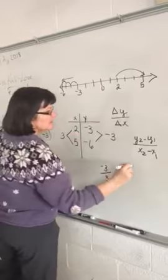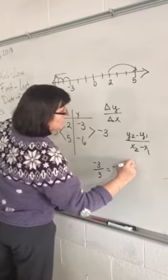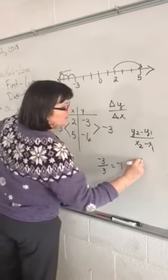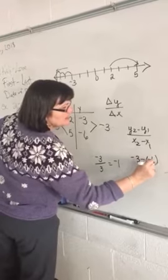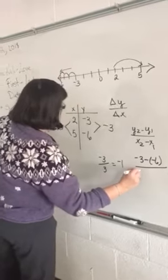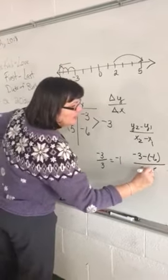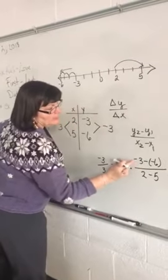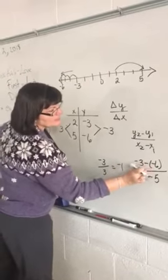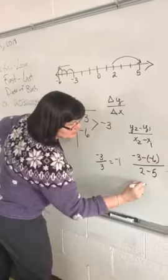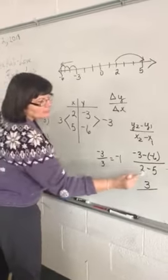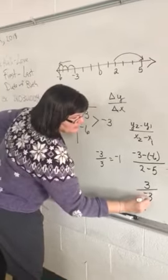But then it turns into being this: negative 3 minus negative 6, and then you've got 2 minus 5. Now you have to go negative 3 minus negative 6, negative 3 plus 6, which is going to be a positive 3 if they don't miss that, and 2 minus 5 is going to be a negative 3.